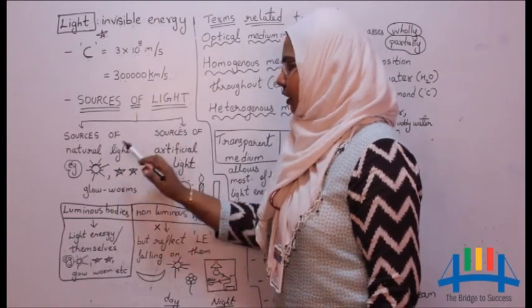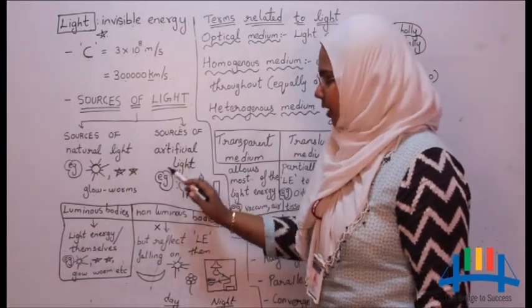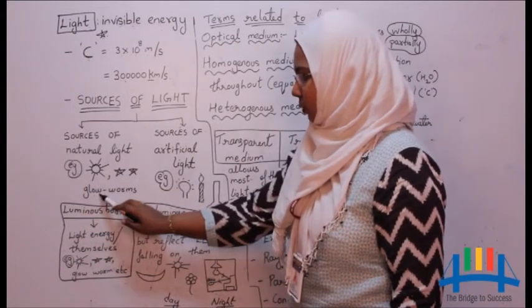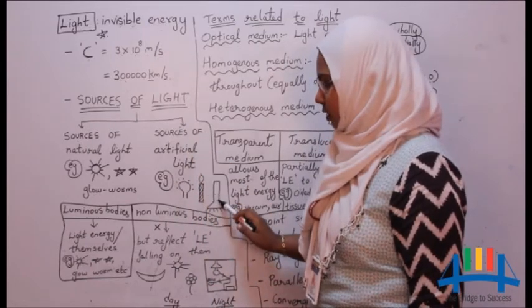There are two sources of light: natural source of light and artificial source of light. Examples of natural sources are sun, stars, and glow worms. Examples of artificial light are bulb, candle, and torch.